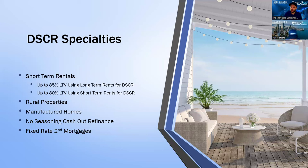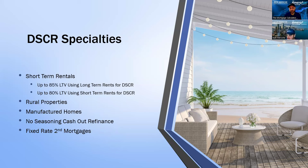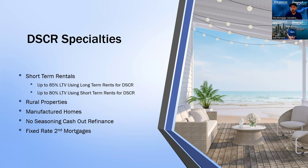Some of the specialties we can do with some of these programs: we can do short-term rentals — up to 85% LTV using long-term rents and up to 80% LTV using short-term rents. We can do rural properties and manufactured homes under a couple of programs — DSCR on a manufactured home is a no-brainer for a lot of investors. We have no-seasoning cash-out refinances, very popular for fix and flippers or anyone buying distressed properties. You buy a property today and we can refinance you tomorrow. We also have fixed-rate second mortgages with a DSCR option for investors that don't want to touch their first mortgage.